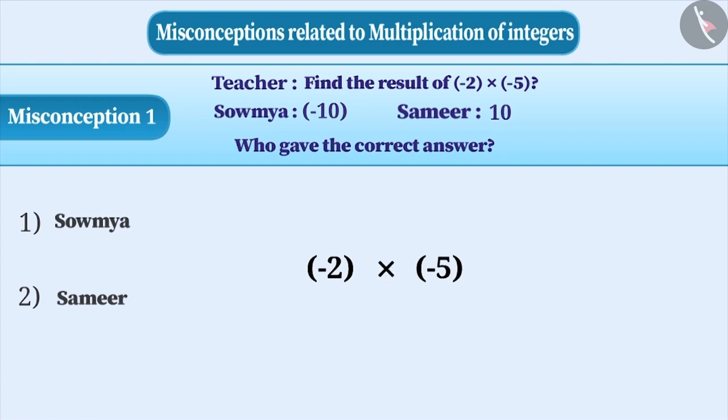Sometimes, the concept of multiplication of two negative integers is not understood properly. Product is calculated ignoring the signs and the result 10 is obtained. But the concept is misunderstood as when two negative numbers are multiplied, the product is a negative number.